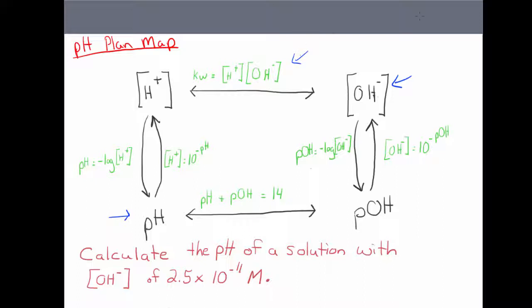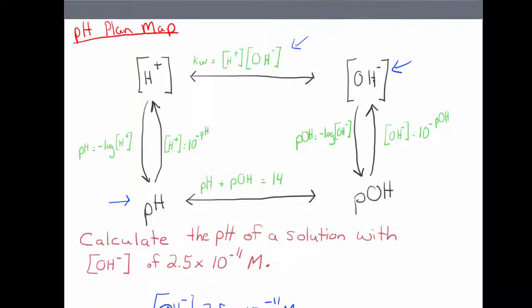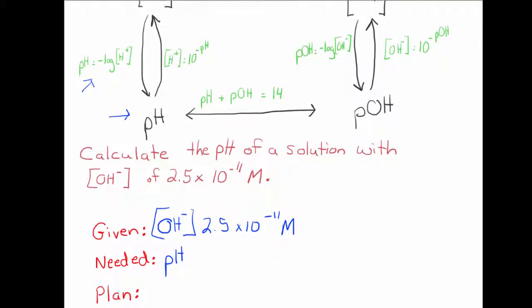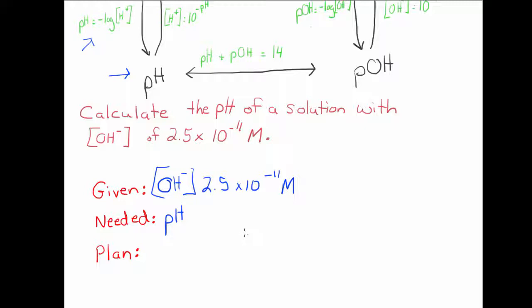Kw equals the hydronium concentration times the hydroxide. Then I'm going to use pH equals negative log times the hydronium concentration. I'll write that plan here. And then we will solve. This will be my first step and this will be my second step.